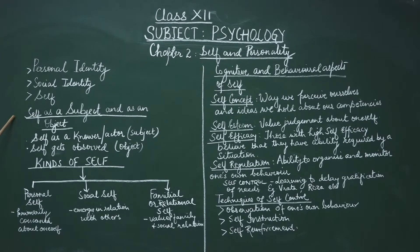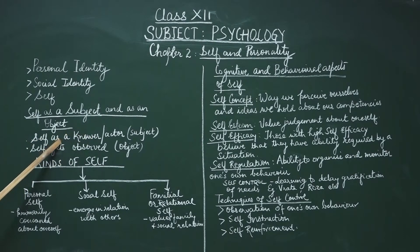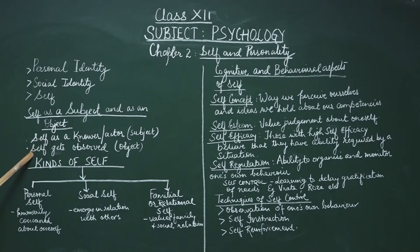Coming to the next concept: self as a subject and self as an object. When self is a subject, self is a knower, self is an actor, and self is engaged in the process of knowing itself. But when the self is getting observed, it becomes known as self as an object.